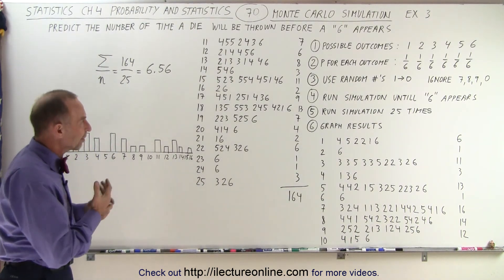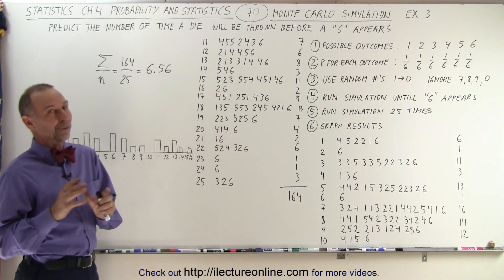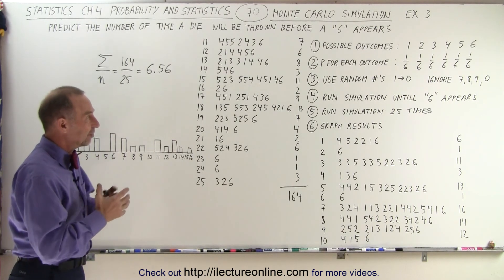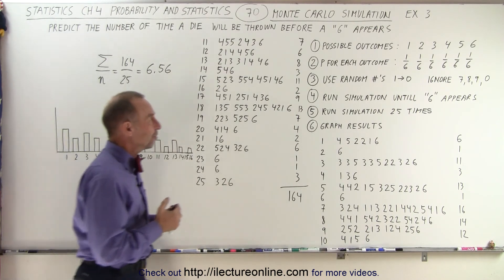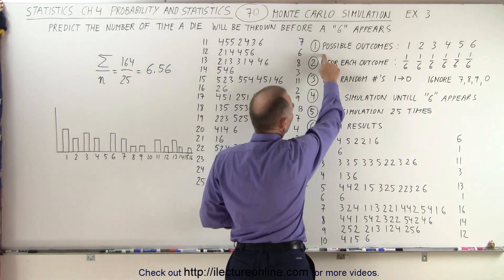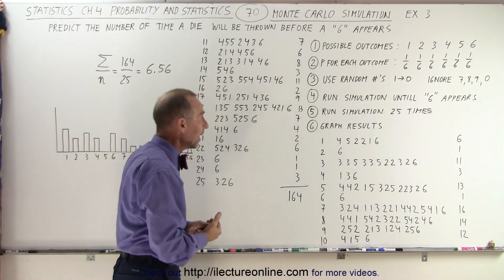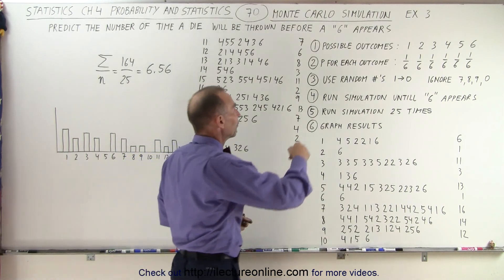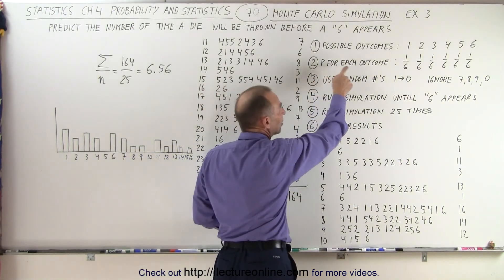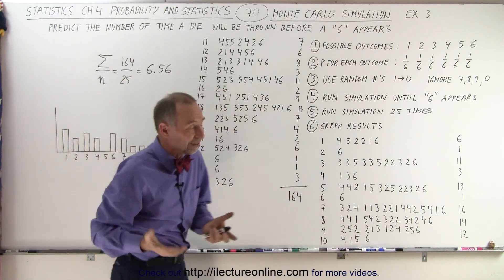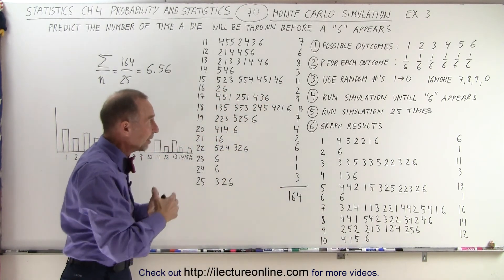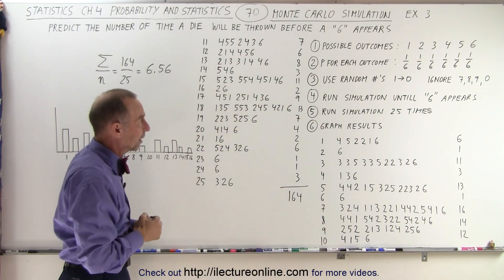Well, I ran the simulation and this is how I went about it. First you have to identify all the possible outcomes, and of course there are six possible outcomes to throwing a die. Then you have to figure out the probability for each of the six outcomes, and in this case it's easy—the probability is one-sixth for each of the six outcomes.